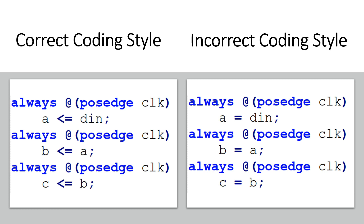Keep this in mind: in our code right now we have always blocks with single-line statements only, and for single-line statements it does not matter for the synthesizer whether you use blocking or non-blocking assignments. But in cases where an always block consists of multiple-line statements, the logic synthesis results will vary and the results will definitely be wrong when using blocking assignments. I will illustrate that in the next video — the link will be in the description and at the end screen.